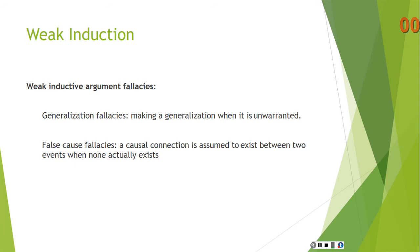A generalization fallacy is making a generalization when it's not warranted. A false cause fallacy is when a causal connection is assumed to exist between two events when none actually exists — you're saying that A caused B when there is no causal connection between A and B.